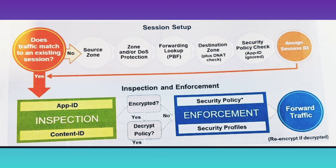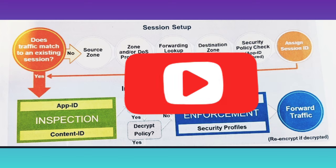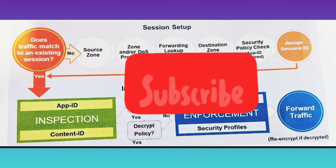Once all verification is performed, the packet is encrypted and forwarded to the respective interface — either the outbound interface or the TCP/IP stack. This is how the packet flows in a Palo Alto firewall. If you like this video and found it informative, please subscribe to my channel. I will see you in the next video. Have a good day.